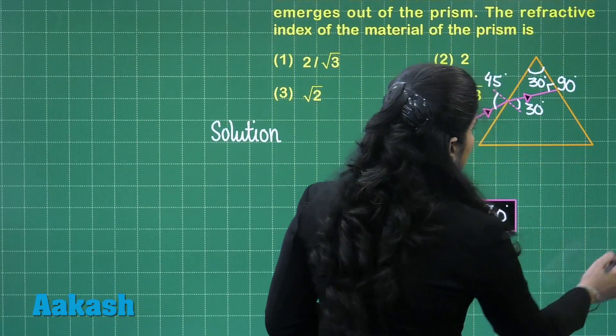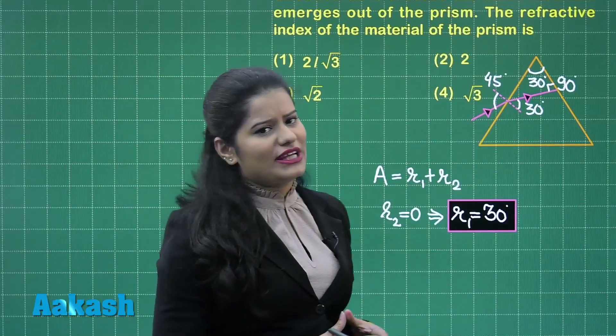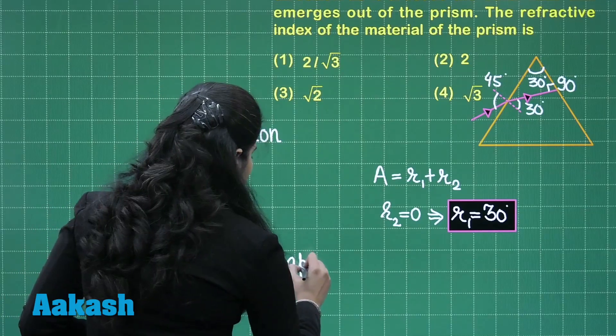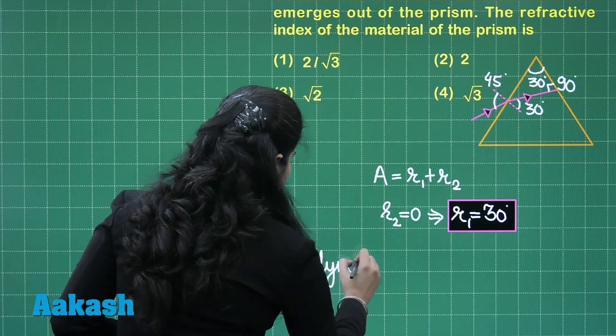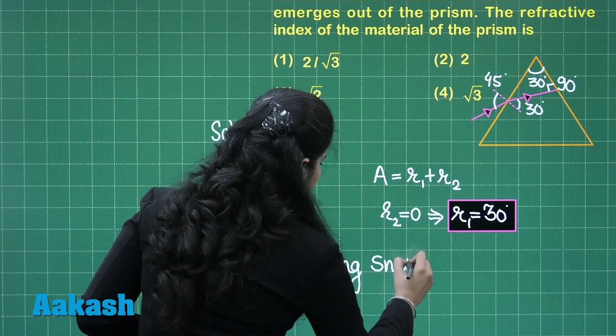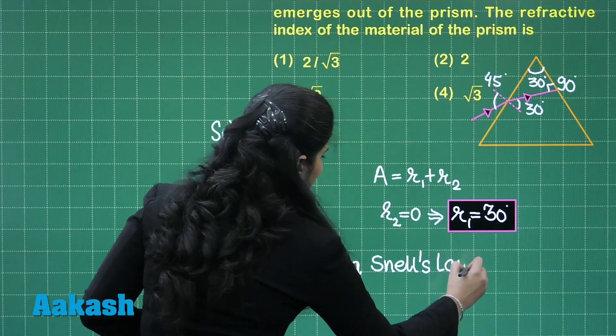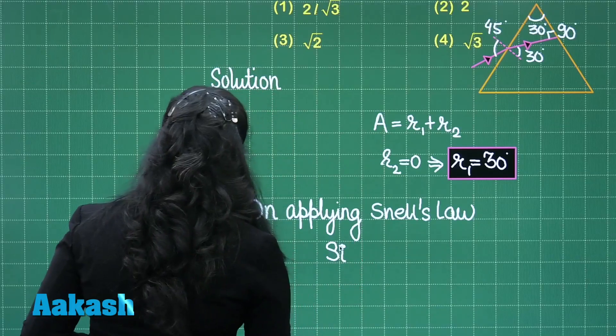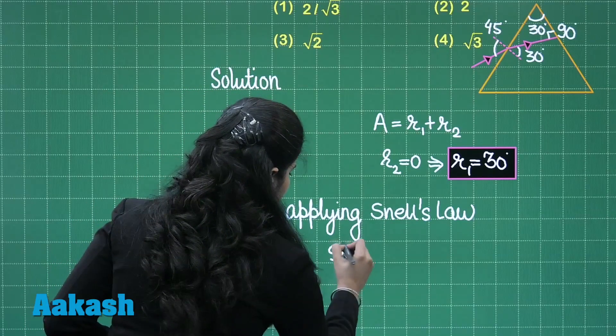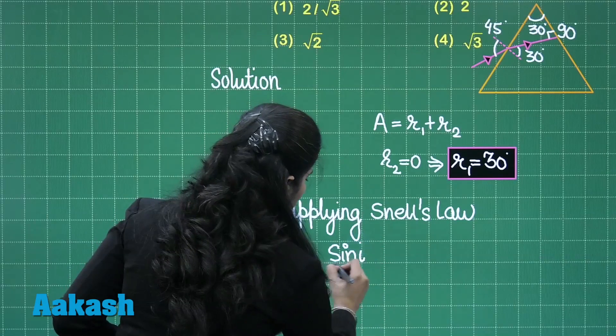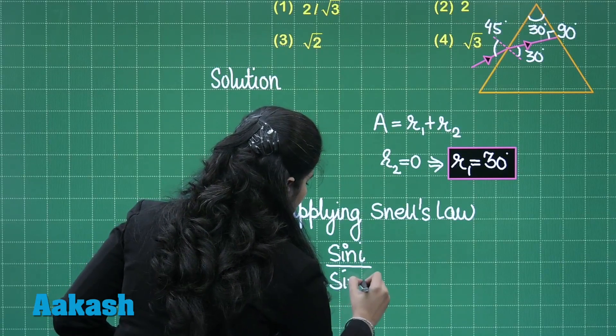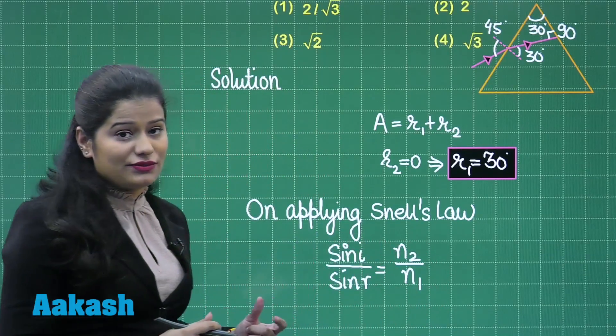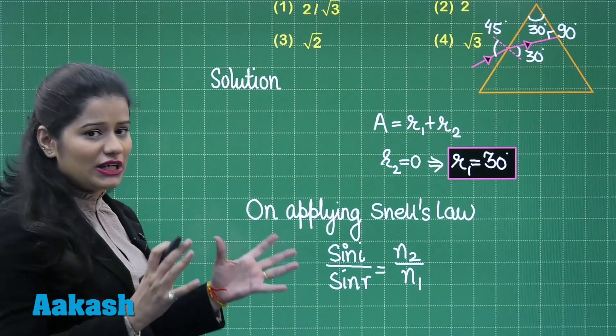For the complete solution of this question, what I will do is apply Snell's law here at this face of the prism. On applying Snell's law, I will get sin i by sin r equals N2 by N1. What is N2? It is the refractive index of the prism, and N1 is the refractive index of air, which is 1.